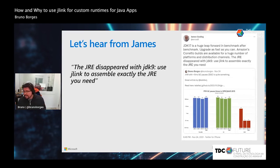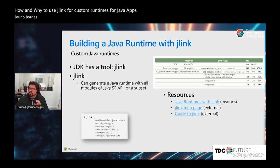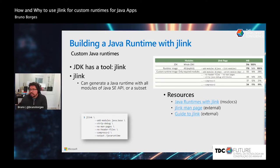Even James Gosling says that JREs disappeared in JDK 9 — use JLink to assemble exactly the JRE you need. JLink is a tool in the JDK that allows you to assemble a Java runtime. 'Assemble' is the right word — nothing is being generated, it just assembles a copy of the Java runtime from the JDK to a separate folder with only the pieces your application needs, removing development tools, unneeded modules, and unneeded files.